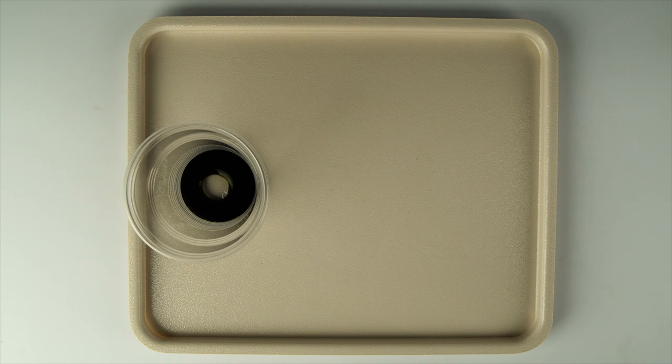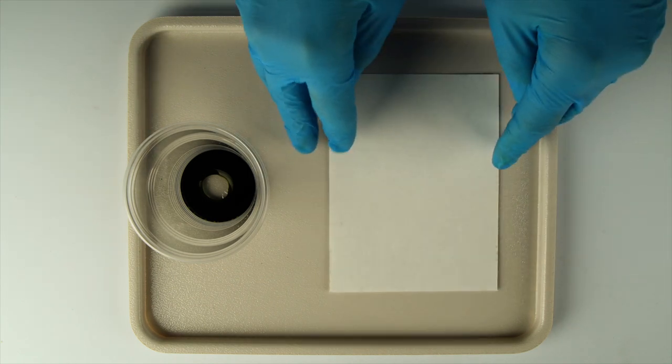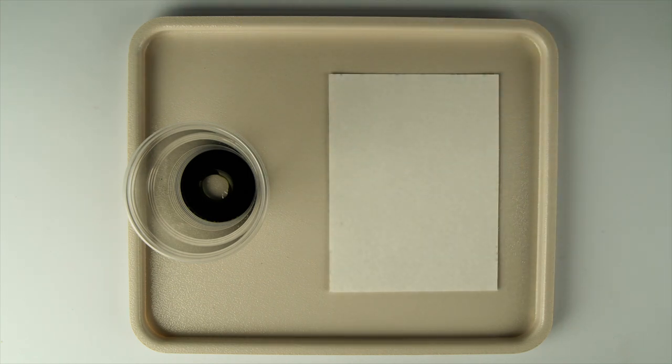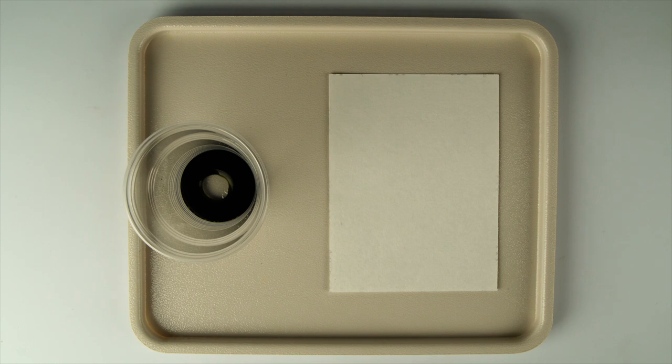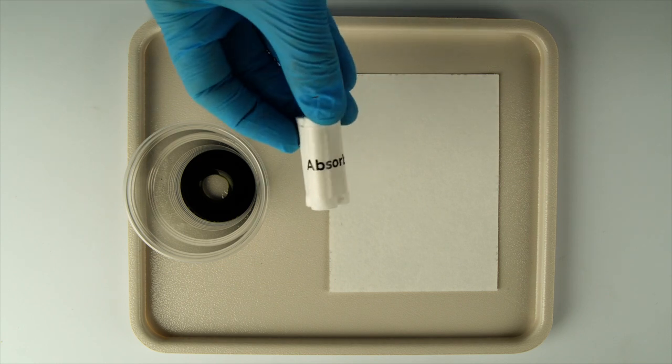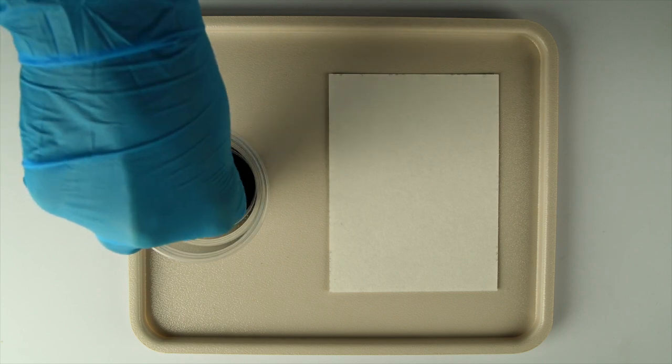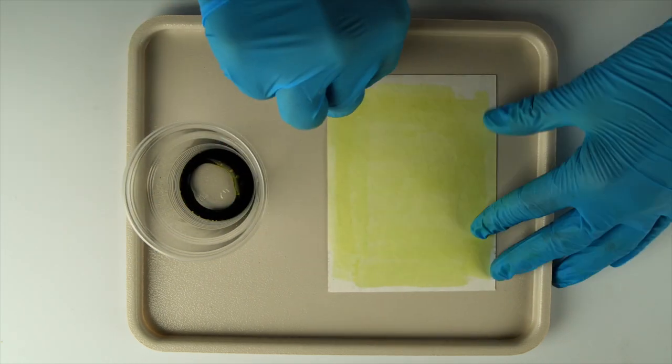Now, apply the light-sensitive mixture. Take your piece of watercolor paper and position it so that the non-watermarked side is facing up. Dip the absorbent pack in your light-sensitive mixture and use it to apply the mixture evenly across the surface of the paper.